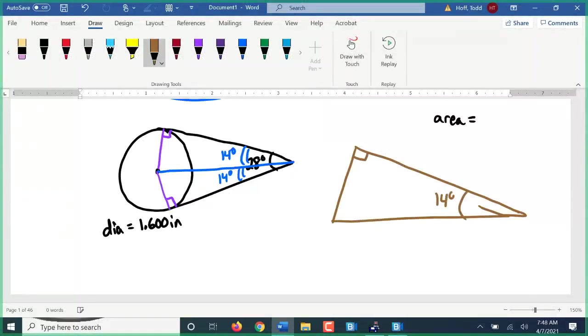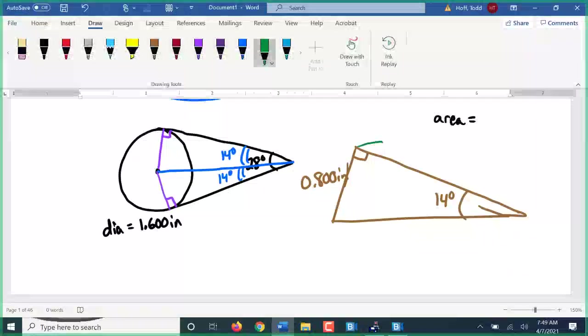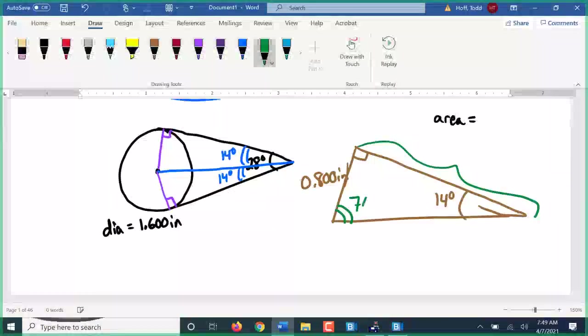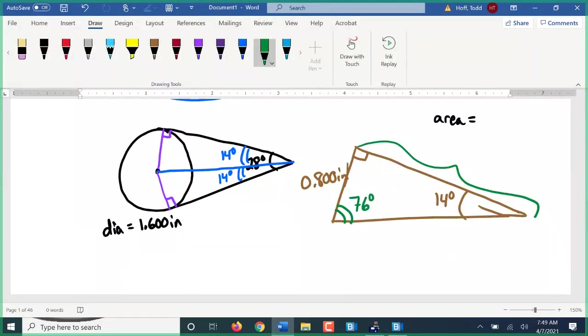I know this is 14 degrees. Do I know anything else about that triangle? Side here is the radius. Very good. Which would be 0.8, half of my 1.6 diameter. There are two pieces of information now that I need. One is I'm going to need this side. The second is I'm going to need this angle. Well, that angle is real easy to find. What's it have to be? Angles add up to 180. That's 76 degrees.